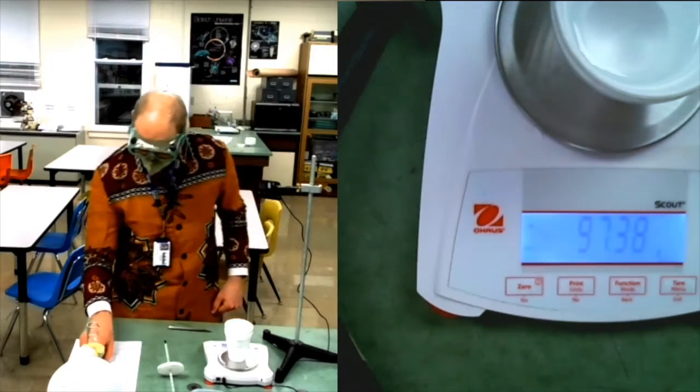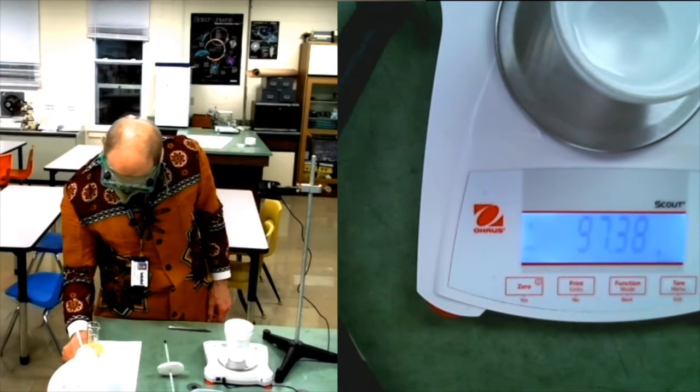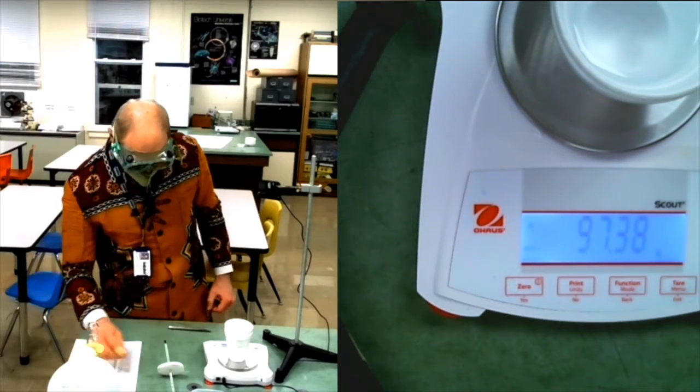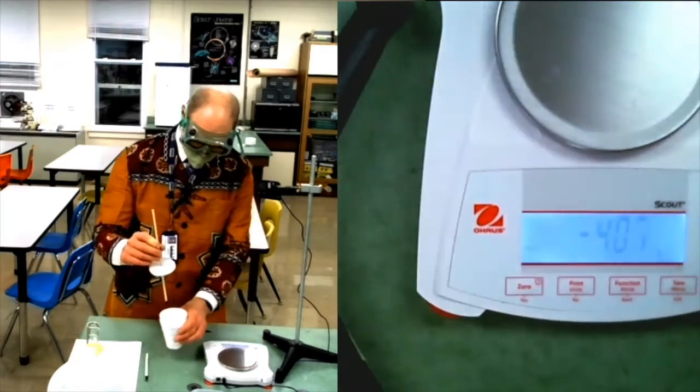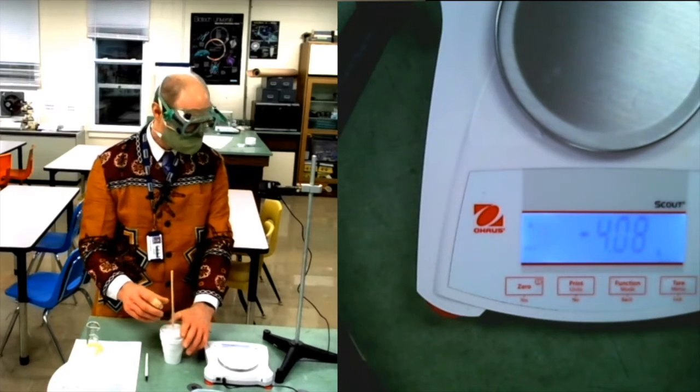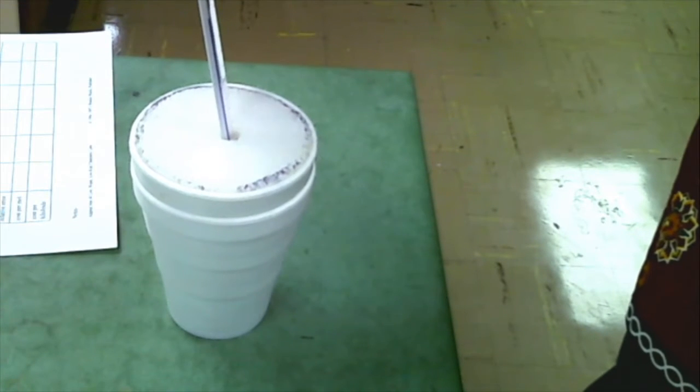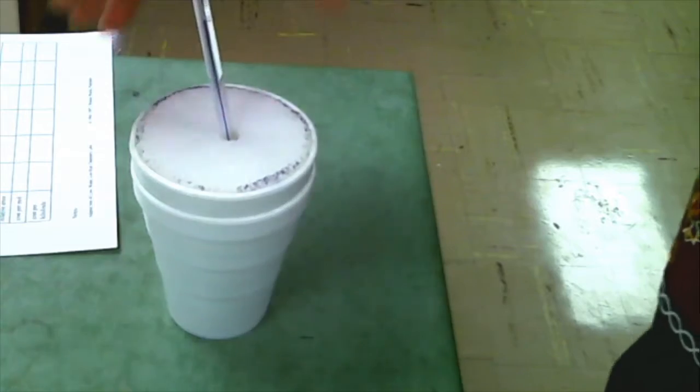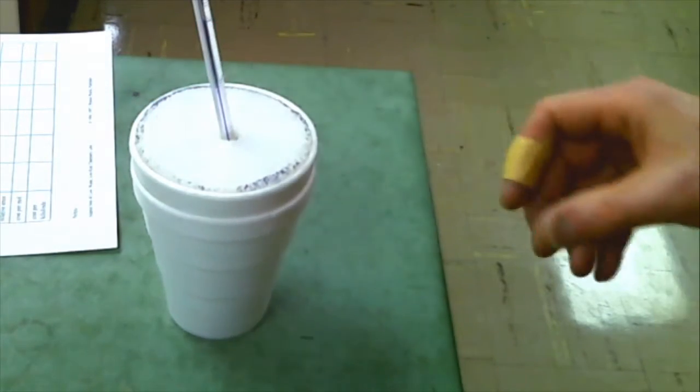Ninety seven point three eight grams of water. Find its temperature. I'm going to call this twenty one point one Celsius.